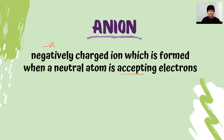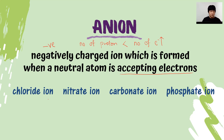An anion is a negatively charged ion, which is formed when a neutral atom accepts electrons. That causes the number of protons to be less than the number of electrons, because electrons are added to the neutral atom. A few examples of anions: chloride ion Cl minus, nitrate ion NO3 minus. Note that nitrate and nitrite are different — nitrate is NO3 minus, while nitrite is NO2 minus, so be careful in identifying them.